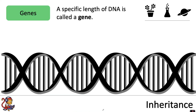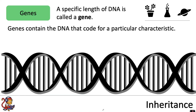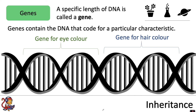A specific length of DNA is called a gene. Genes contain the DNA that codes for a particular characteristic. For example, if we had our double helix unraveled from the chromosome, a particular length of that might code for eye colour, and another gene might code for hair colour. For most characteristics it's not quite as simple as that, because there might be several genes that code for eye colour and several that code for hair colour, all interacting to determine what your characteristics are going to be.